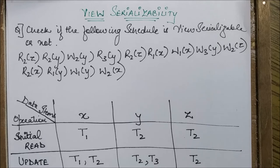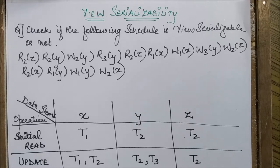Both things can be asked independently or they can also be clubbed as a linked question in GATE. So whenever we get a question asking to check if a schedule is serializable or not, we first check conflict serializability by drawing the precedence graph. If we get an acyclic graph, it is conflict serializable and hence serializable. If we get a cyclic graph, it is not conflict serializable, and we then need to check for view serializability.